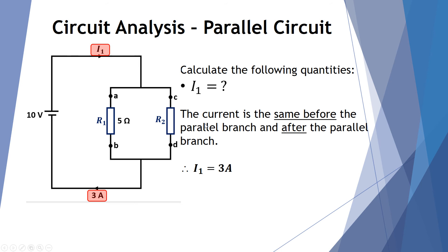Even though this is a parallel circuit, we know that the current before the branch will be equal to the current after the branch. So the current at the top will also be 3 amps. The current splits through the first branch and the second branch but then reunites afterwards. So it makes logical sense — the current before the split equals the current after the split, which is 3 amps.